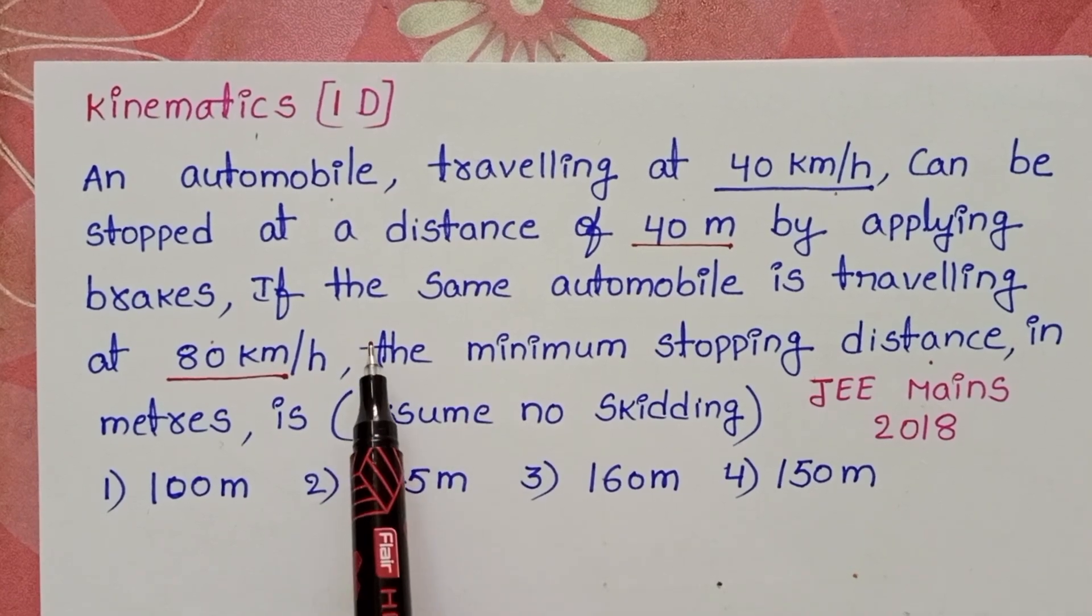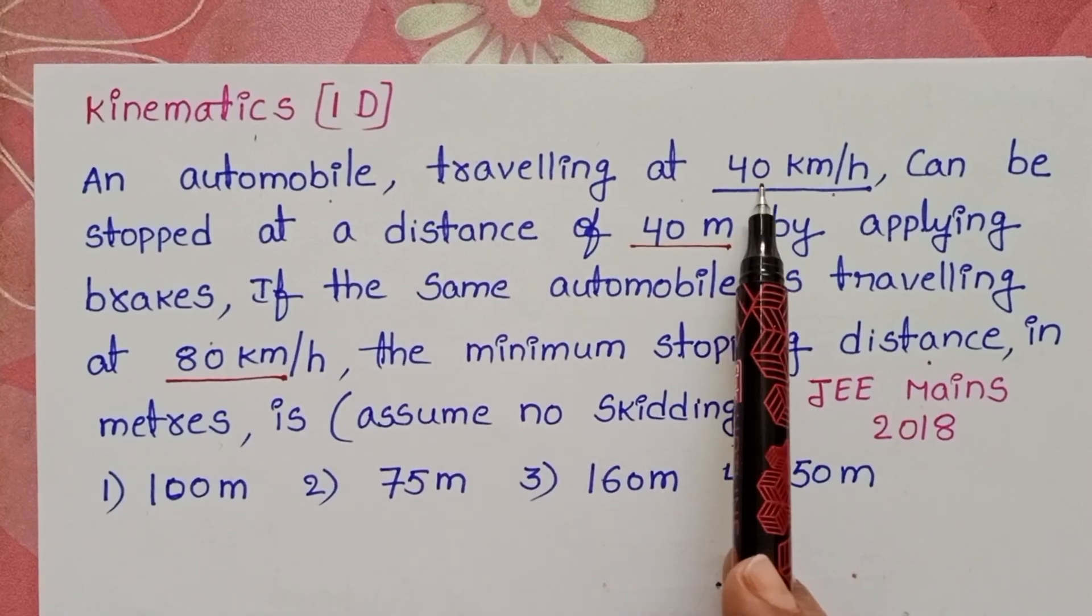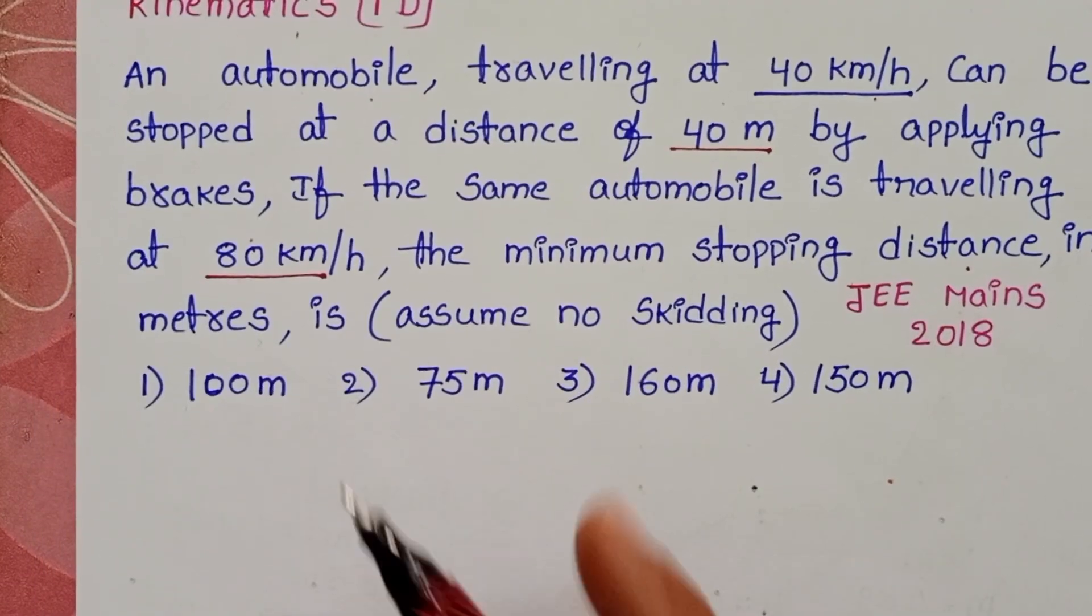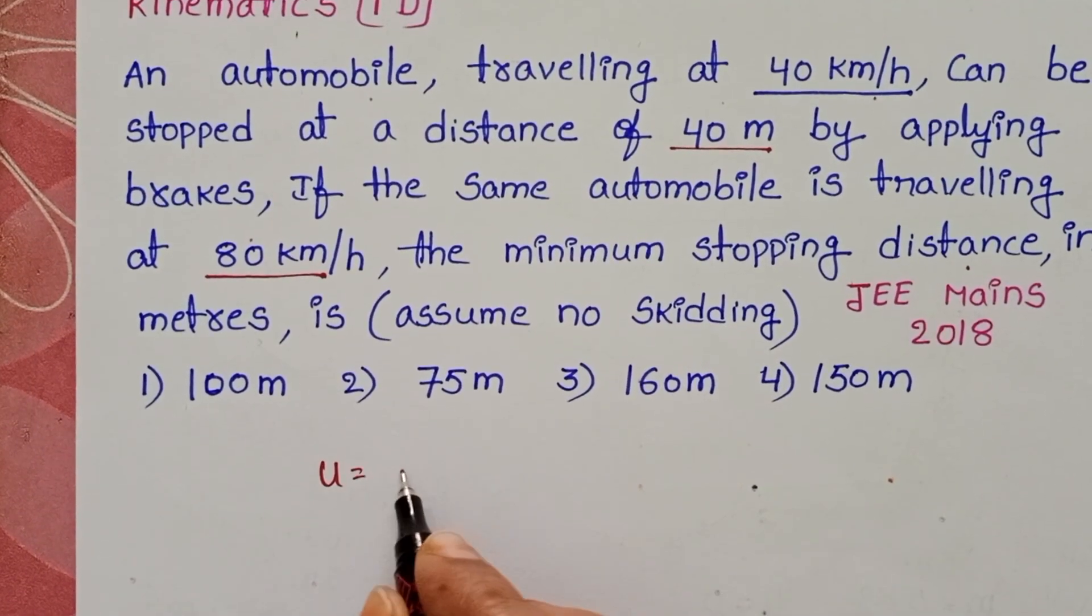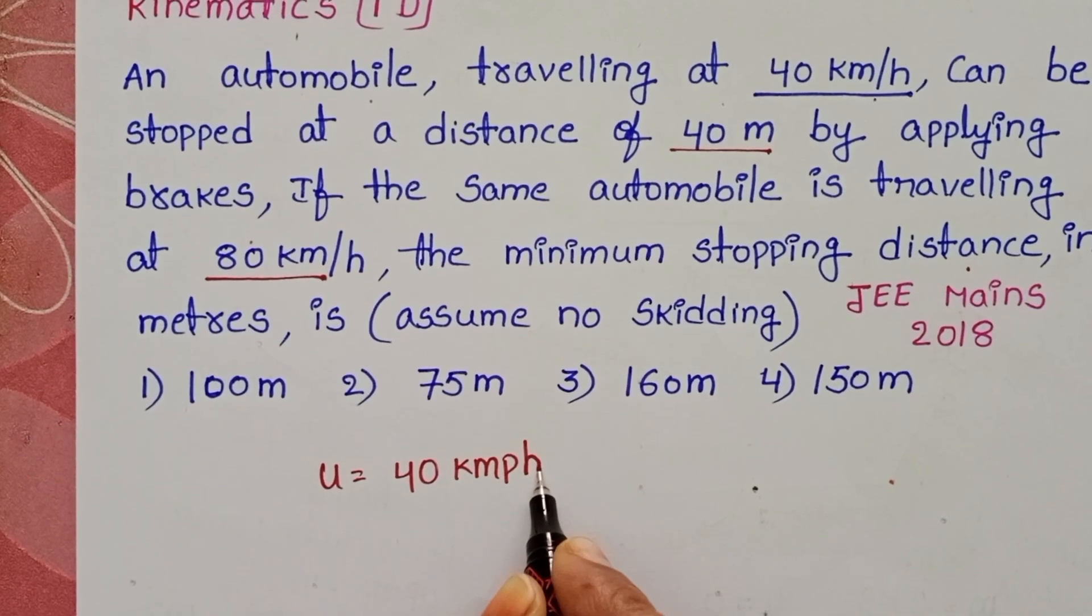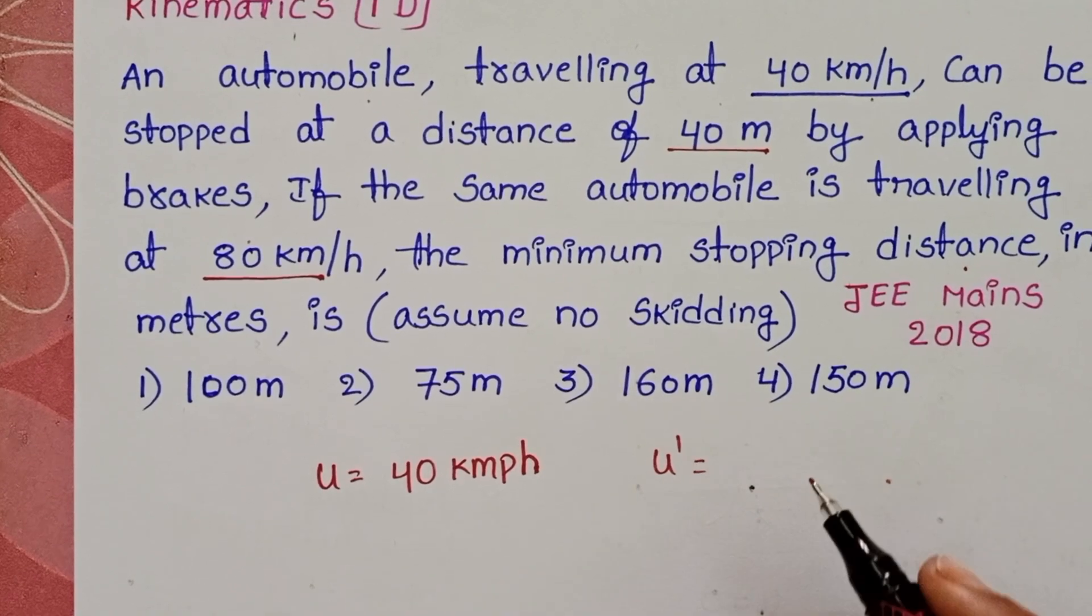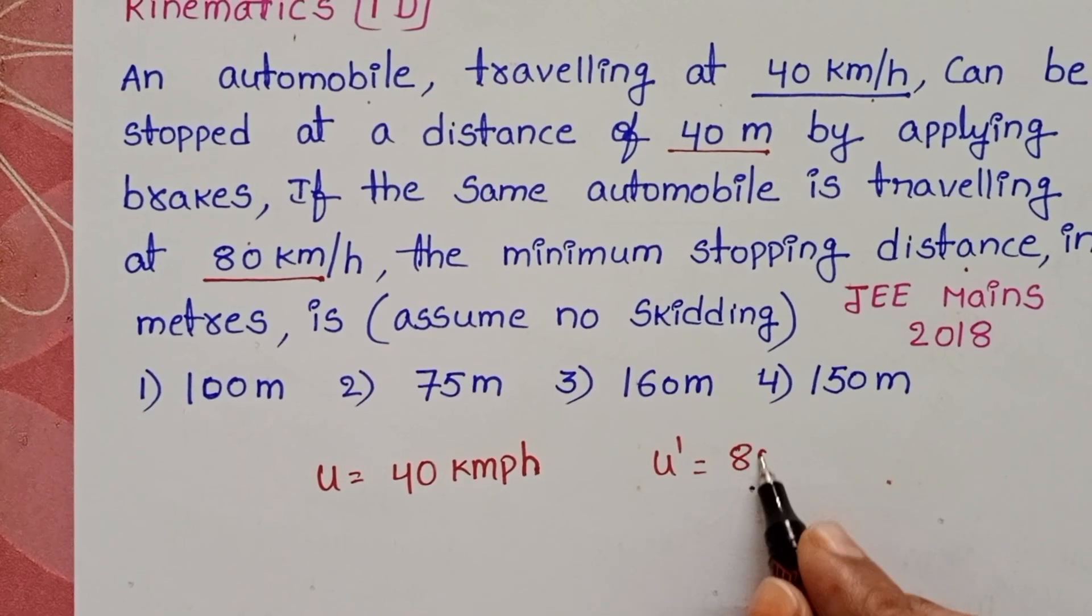In this question, there are two cases. Initially, an automobile is traveling with a speed of 40 km per hour, so u = 40 km/h. In the second case, the same automobile is traveling at a speed of 80 km per hour, so u' = 80 km/h.